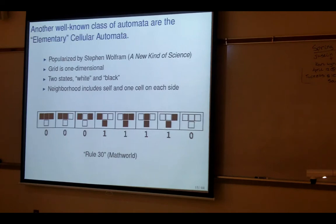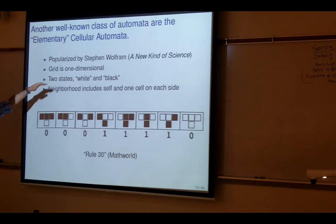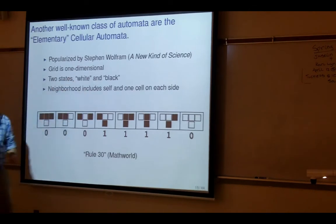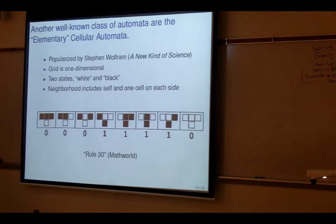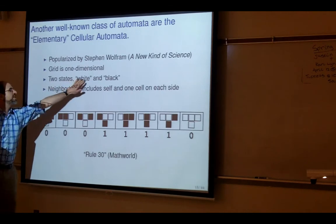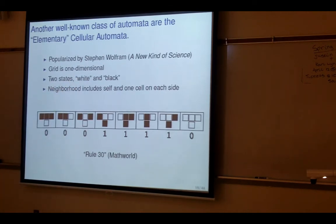That's one of the really earliest examples of cellular automata. There's another well-known class called elementary cellular automata — these are about as simple as you can get, even simpler than the Game of Life. These were popularized by Stephen Wolfram, who wrote 'A New Kind of Science' about how he thought every piece of science and mathematics should be modeled with cellular automata. That seems a little extreme, but you can do lots of interesting things even with these simple ones, where you have a one-dimensional grid — just a line of cells — with two states: white and black.